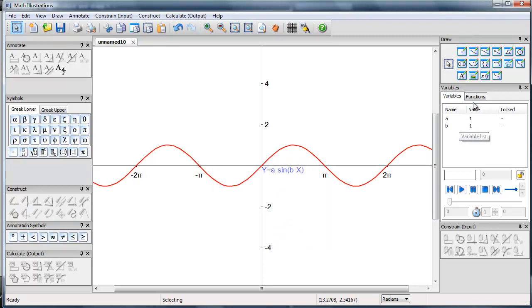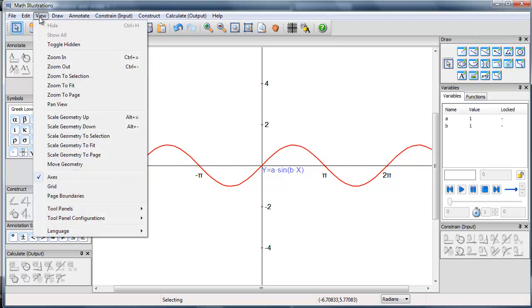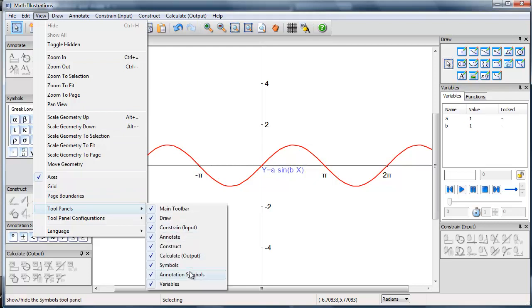And we see that a and b, if we look in the variables panel, a and b have value 1. If you can't see your variables panel, what you need to do is go into view tool panels and turn the variables panel on.